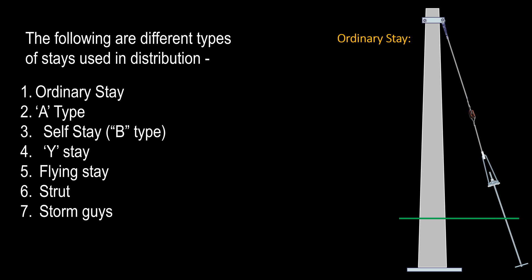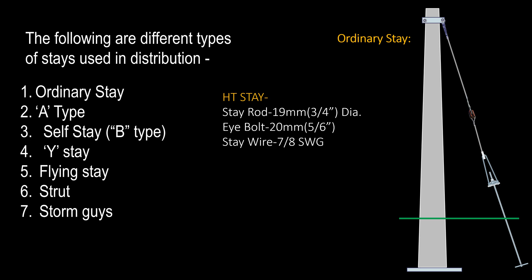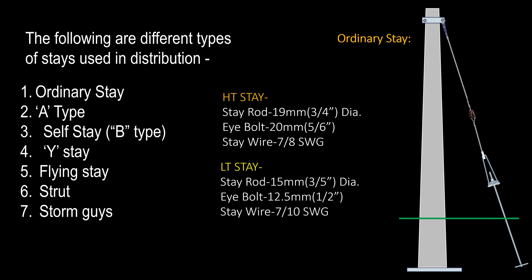Ordinary Stay: This type of stay is generally used in the distribution system. The size of stay rod, turnbuckle, and stay wires are to be used as per the line tension. Generally for HD lines: 19 mm or 3×4 inch diameter stay rod, 20 mm or 5×6 inch size eye bolt, and 7×8 SWG size stay wires are used. For LTE lines: 15 mm or 3×5 inch stay rod, 12.5 mm or 1.5 inch eye bolt, and 7×10 SWG stay wires are used. The stay insulator shall be used at a vertical height of 3 m (10 ft) from the ground.